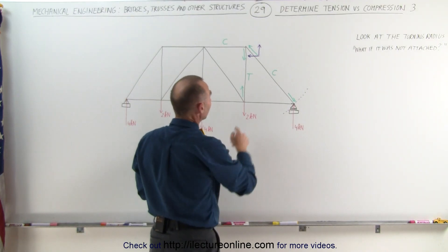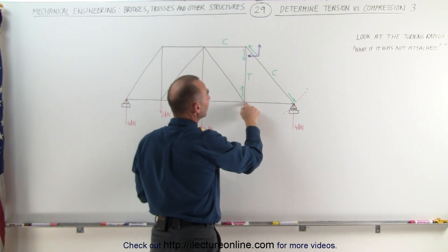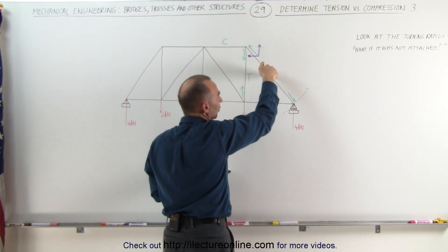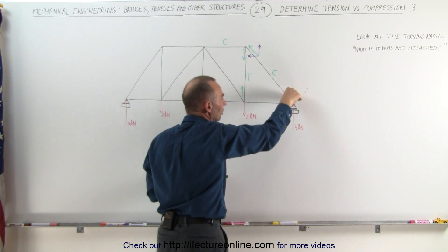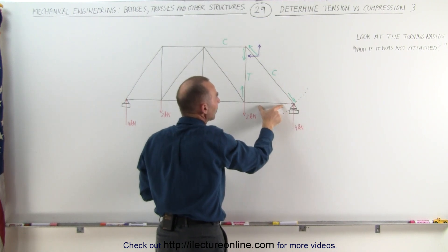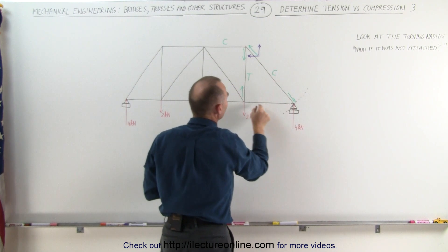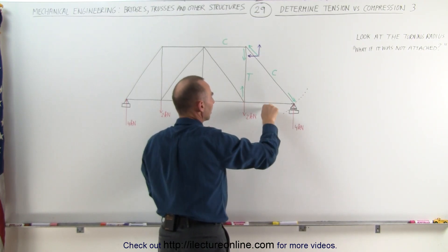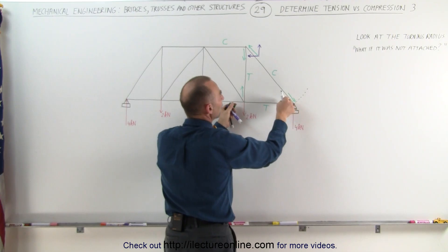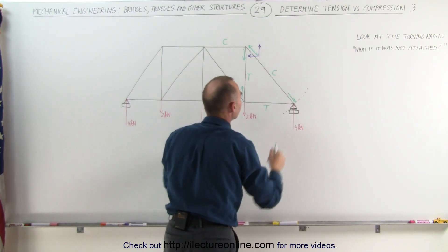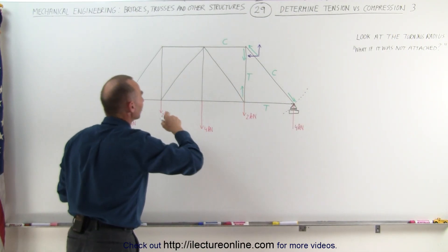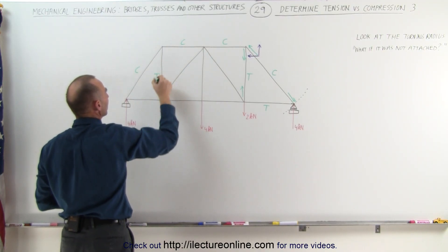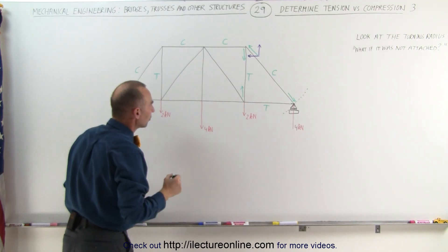Notice that if this member was not attached here, and it was allowed to swivel because it's under compression, this member pushes back in this direction. What's holding this member from being pulled away is that it's attached here, forming a tension force that keeps it from being pushed away. By symmetry, this member must be under compression, this member must be under compression, this must be under tension, and this must be under tension.